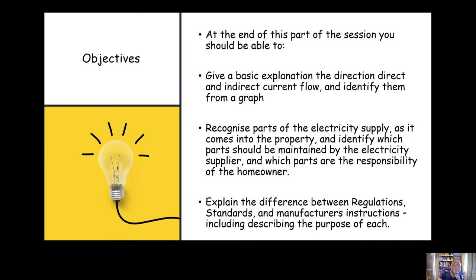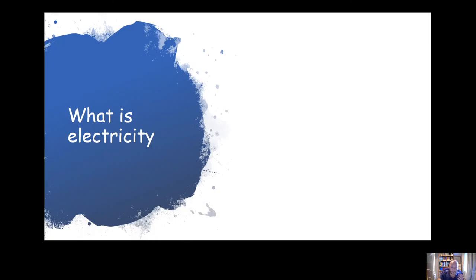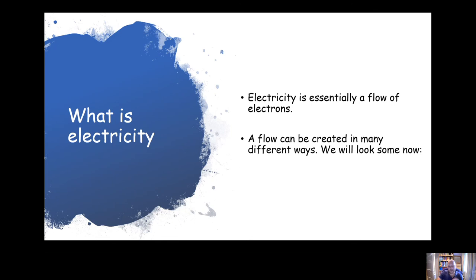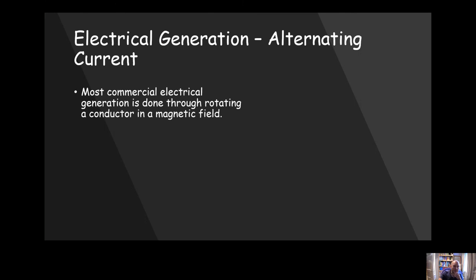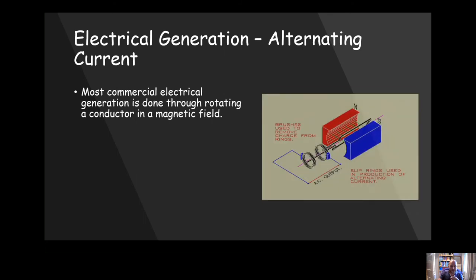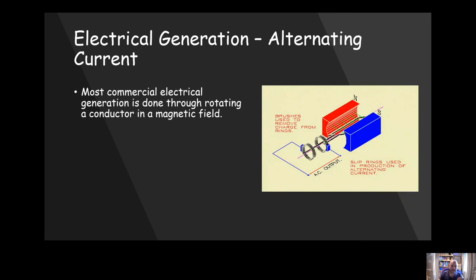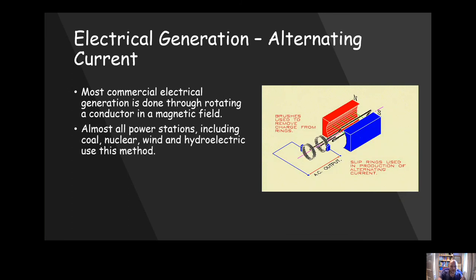So, what is electricity? A good place to start for this module: electricity is the flow of electrons. A flow can be generated in different ways, and we're going to have a look at this now. The most common method of generating electricity generates alternating current, and this is essentially done by rotating a conductor in a magnetic field.